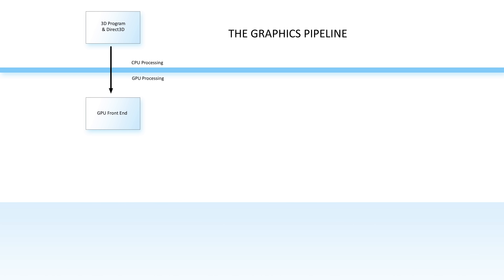The driver sends the data to the GPU's front end, which is the part of the graphics chip designed for communicating with the CPU. This data path between the CPU and the GPU has limited bandwidth, and so we're also going to discuss something that can be done to reduce how much information has to be sent between the two processors. Then the data gets sent to the programmable vertex processor, which is the part of the graphics chip where your vertex shader runs.